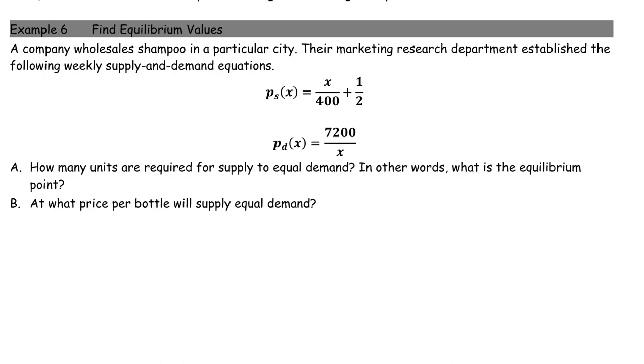In this example, it says a company wholesales shampoo in a particular city. Their marketing research department established the following weekly supply and demand equations. The price supply at X units is X over 400 plus one-half. The price demand at X units is 7,200 over X.